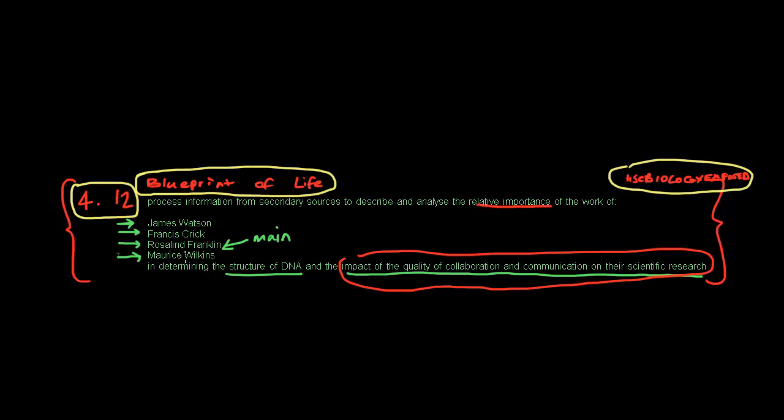So you must remember that Rosalind Franklin was the main scientist, and she was really, really a big part of actually proving that it had a double helix structure. Thanks for watching.